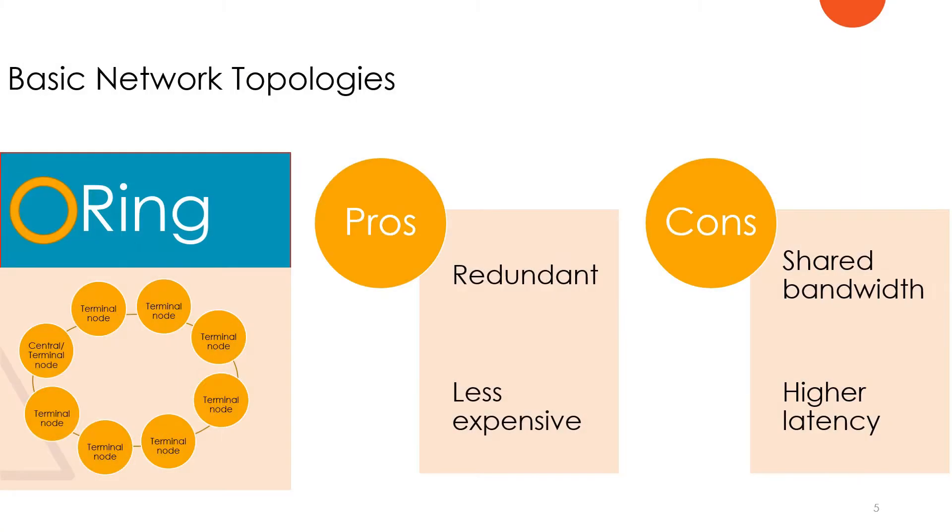On the other hand, if the central node fails, the whole network goes down. The star is non-redundant, and while we can achieve redundancy by doubling the topology with another star, this adds significant cost. So it's non-redundant and expensive, and making it redundant is even more costly.